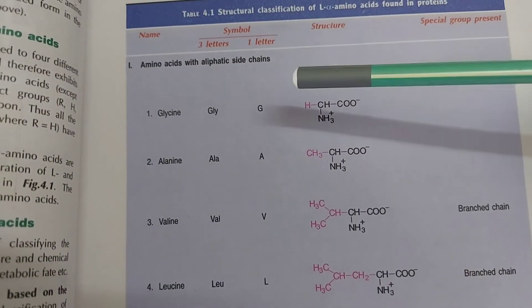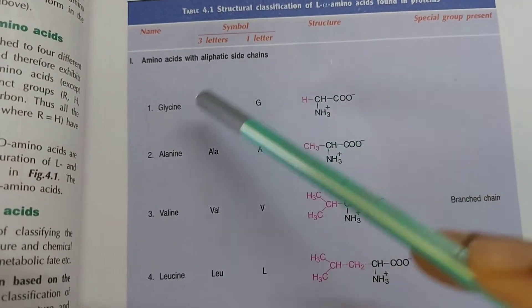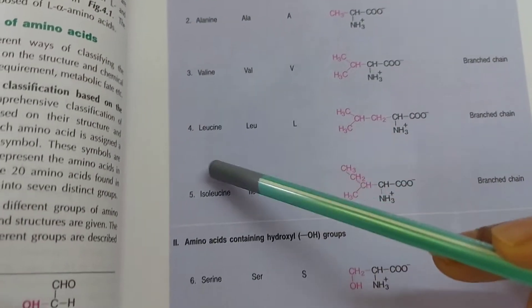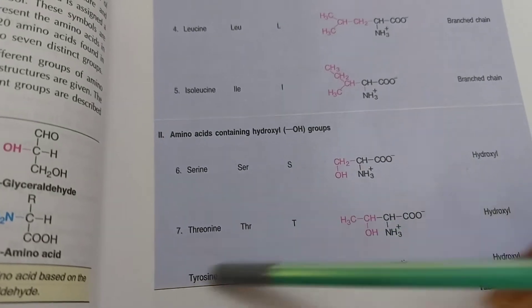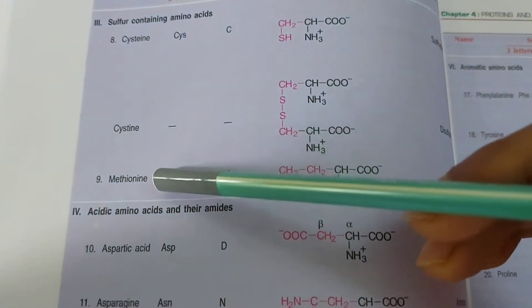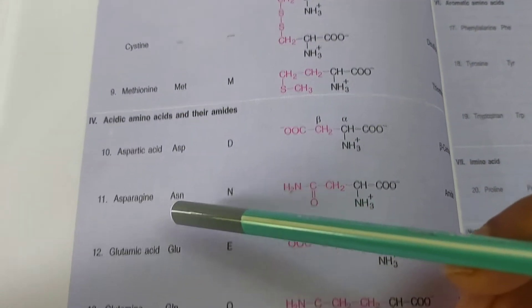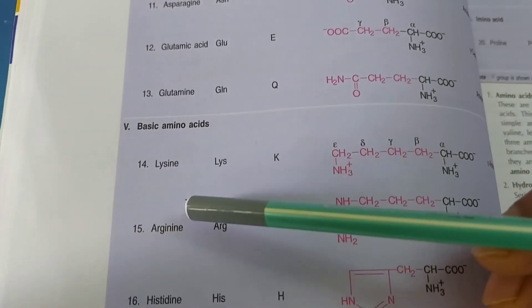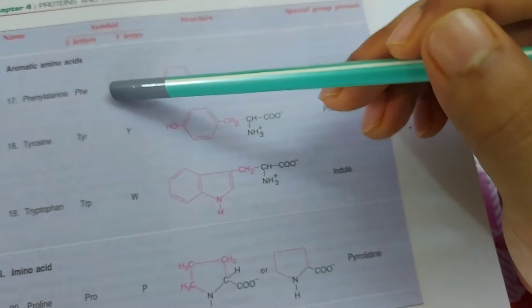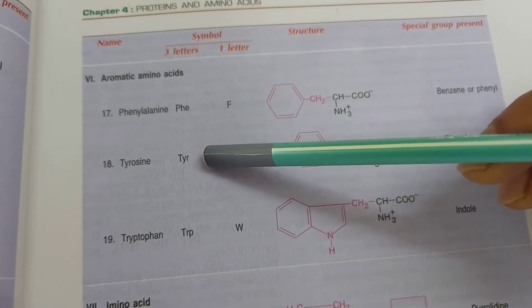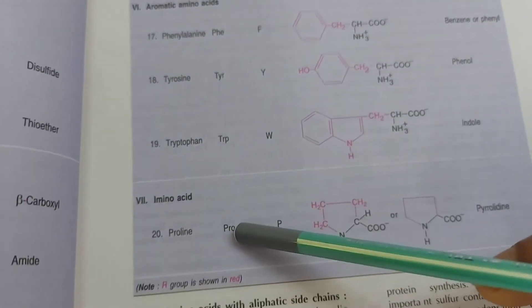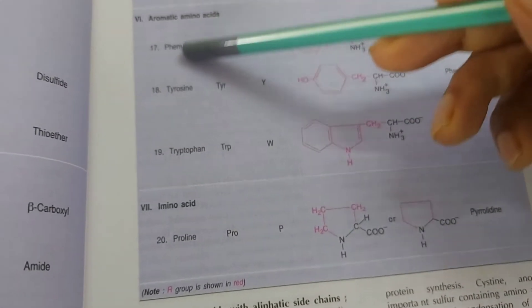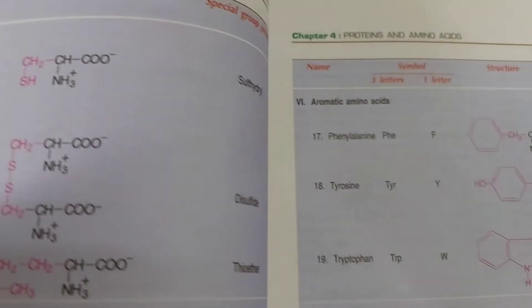Now we will see what the 20 amino acids are. The 20 amino acids present in our body include glycine, alanine, valine, leucine, isoleucine, serine, threonine, cysteine, aspartic acid, asparagine, glutamic acid, glutamine, lysine, arginine, histidine, phenylalanine, tyrosine, tryptophan, and proline. These are the 20 amino acids present in our body.